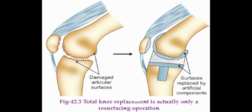As we can see in this picture, total knee replacement is actually only a resurfacing operation. On the left-hand side we can see damaged articular surfaces due to osteoarthritic changes, and on the right-hand side we can see how it looks after TKR. All the damaged parts of the joint are replaced with the artificial component.